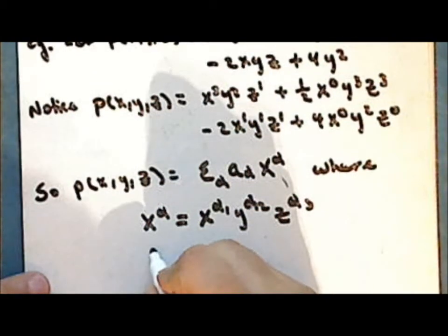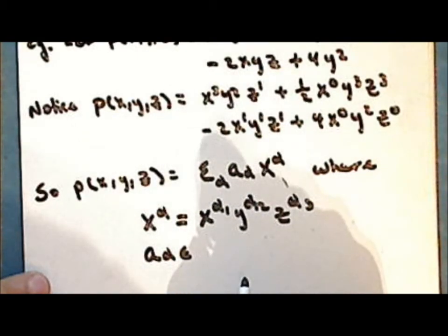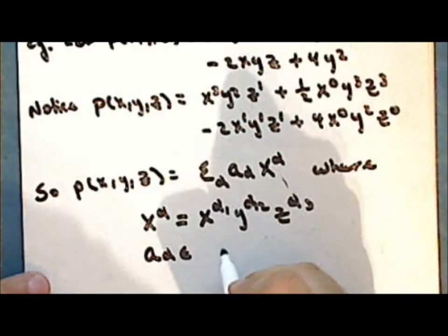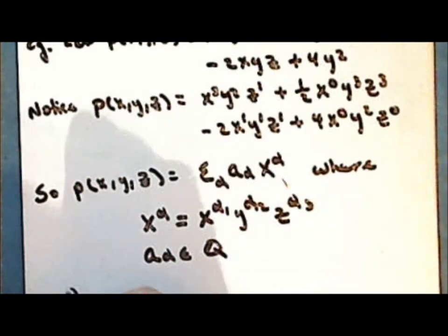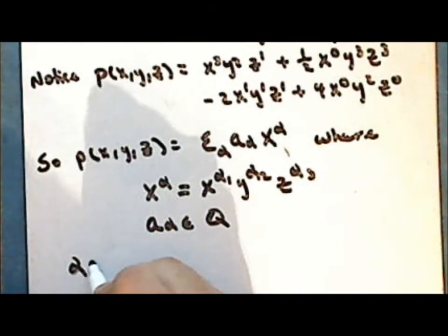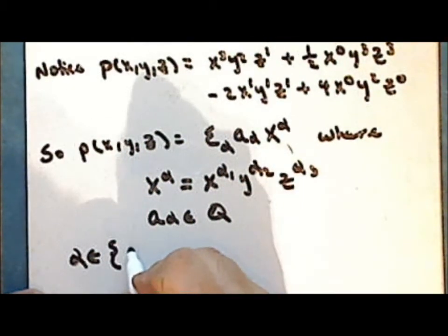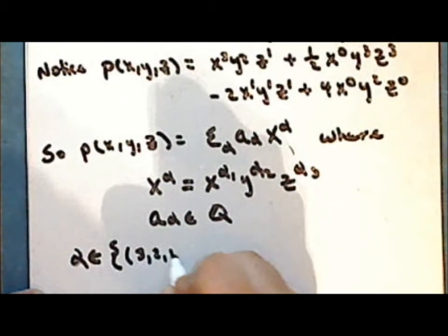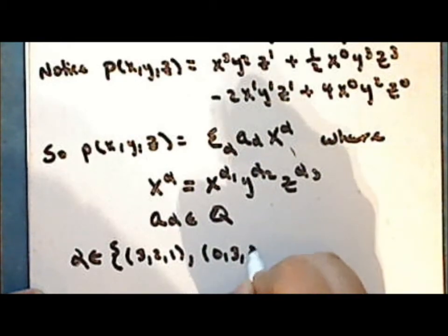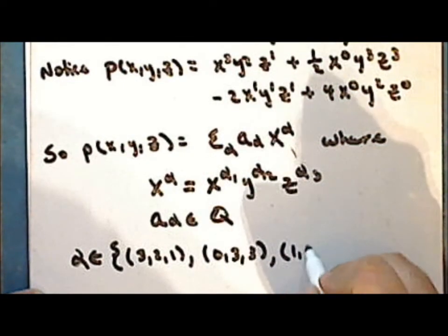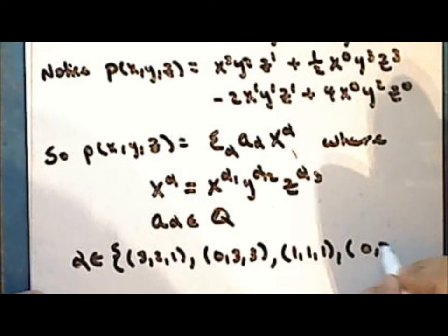Each constant multiple is a number in the field of rational numbers, and the index alpha is in a finite set of ordered triples. The ordered triples are (3, 2, 1), (0, 3, 3), (1, 1, 1), and (0, 2, 0).